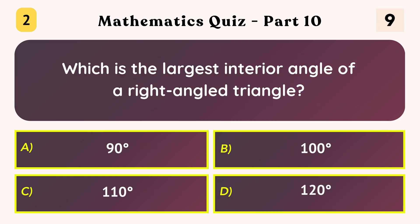Which is the largest interior angle of a right-angled triangle? 90 degrees.